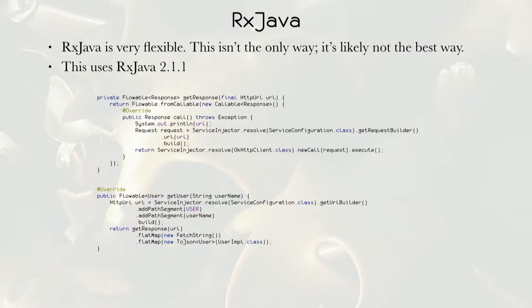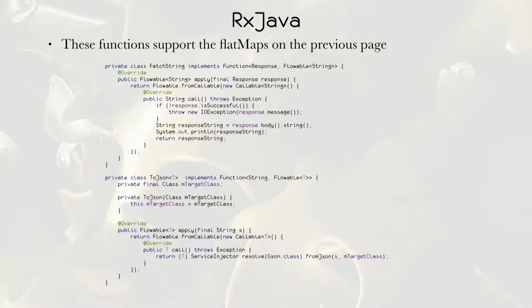Build my URL and then call out to OkHttp. So get user is going to use this get response. It's also going to use these two fetch string and to JSON. So fetch string actually does the work of pulling the string out of the response body. It's totally unchecked in this version. So just all of your API calls should succeed and everything will be fine. That's not good advice. And then we have the to JSON, which again just blindly assumes that we're going to get exactly what we wanted in our body.